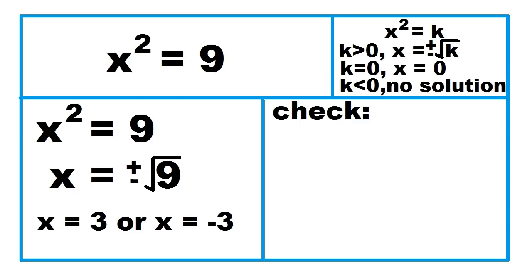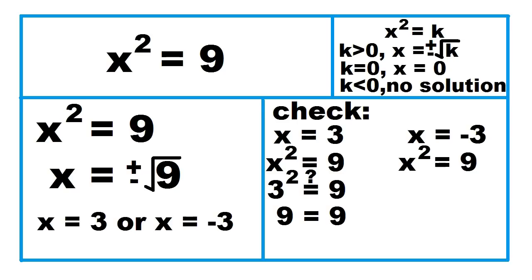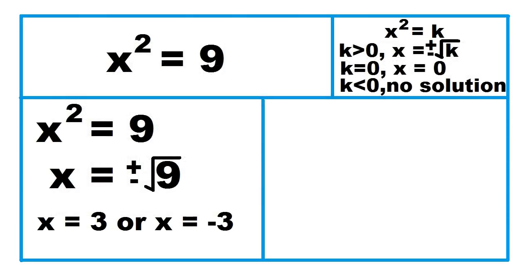Let's check whether both values of x satisfy the given equation. For x equals 3: is 3 squared equal to 9? Yes, 9 equals 9. For x equals negative 3: is the square of negative 3 equal to 9? Yes, 9 equals 9. Both values of x satisfy the given equation, so the equation is true when x equals 3 or when x equals negative 3.